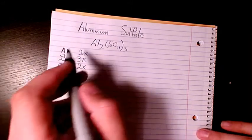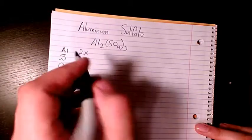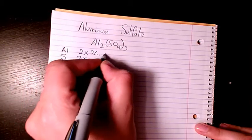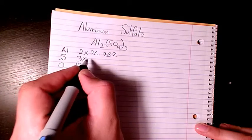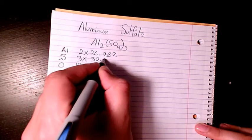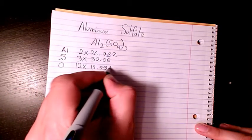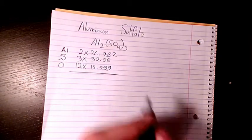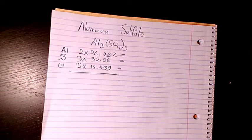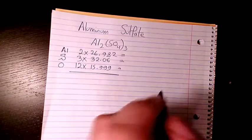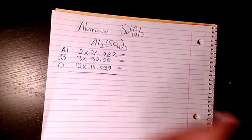So let's find out the atomic mass of each of these elements from the periodic table. Al is 26.982, sulfur is 32.06, and oxygen is 15.999. And then you add them all. You will find each of them first: 2 times 26.982, that's 53.964.